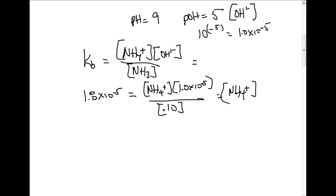I'm just going to solve this equation for NH4+ concentration. I'm going to multiply 1.8 times 10 to the negative 5th by 0.1 divided by 1.0 times 10 to the negative 5th. I should come up with an NH4+ concentration equal to 0.18 molar.